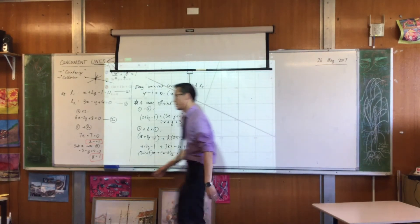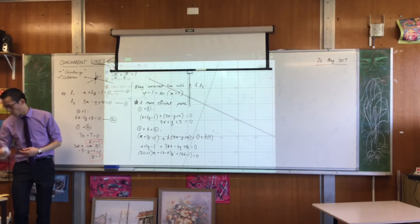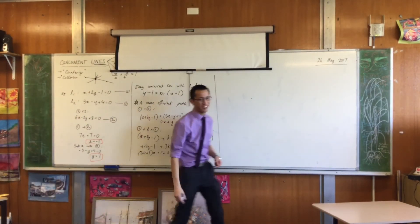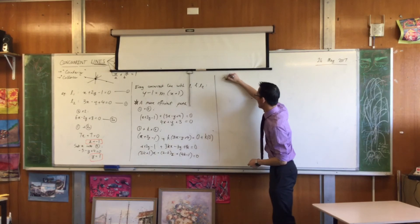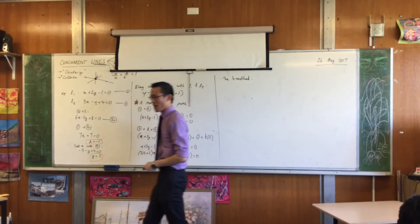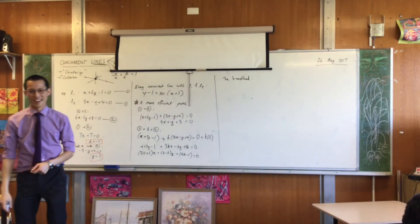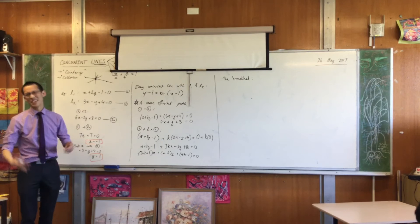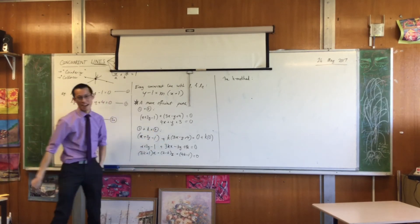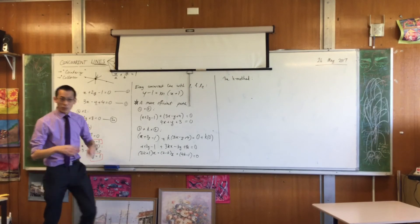let's tie this all up in a nice, neat bow. This process that we've just learned has a name. It's a very, very imaginative name. It is called the k method. Because the other name is finding the equation of a line concurrent with two other lines without finding the point of intersection. Bit of a mouthful. So, k method named after that k right there. How do we summarize this?